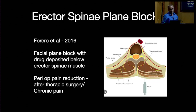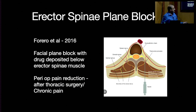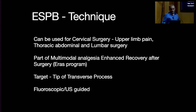The erector spinae plane block is the new addition — started in 2016. It is a fascial plane block where the drug is deposited below the erector spinae muscles. I personally use it for perioperative pain reduction in lumbar and thoracic surgeries. It is now part of the ERAS (Enhanced Recovery After Surgery) program as a component of multimodal analgesia.